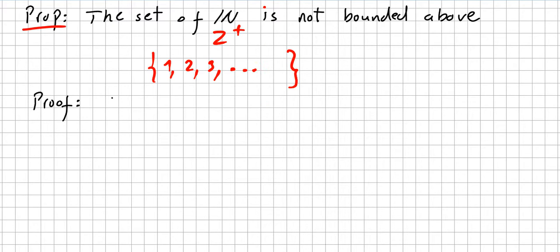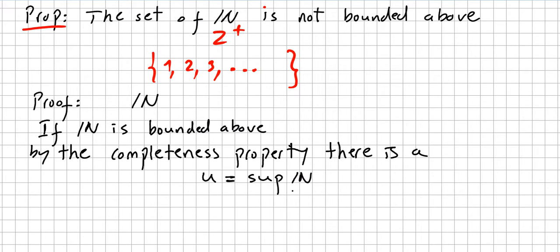Let us prove it. We are going to use proof by contradiction. Suppose for contradiction that the set of natural numbers is bounded above. If the natural numbers are bounded above, then by the completeness property, there is a U that will be the supremum of the natural numbers — a least upper bound for the natural numbers.